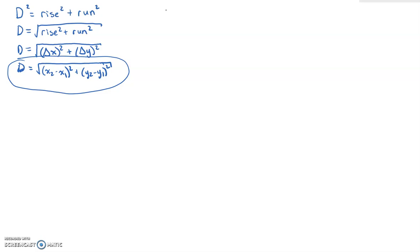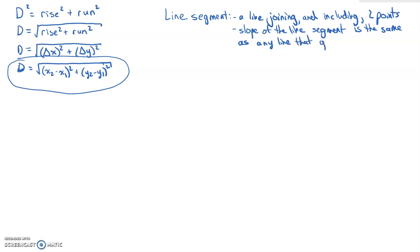You probably already have an idea of what a line segment is, but just so it's very clear, I'm just going to define it here. A line segment is a line joining and including two points. The slope of that line segment is the same as the slope of any line that goes through or passes through those two points. That should be pretty obvious.